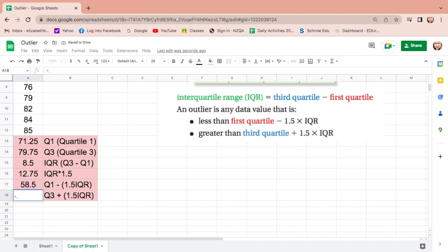And lastly, equals, Q3, click, plus 12.75, equals.